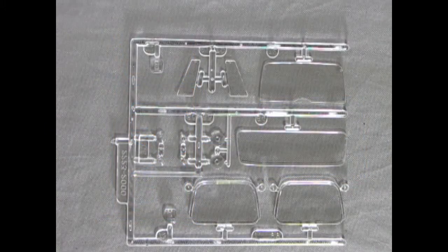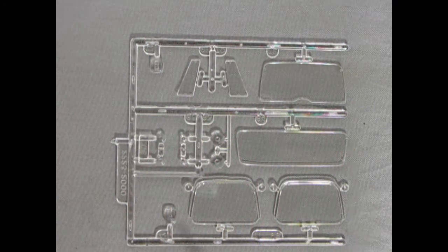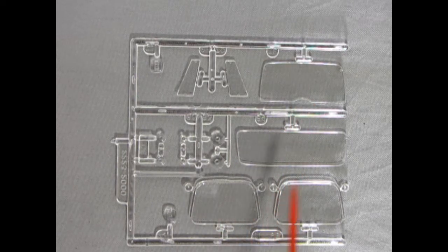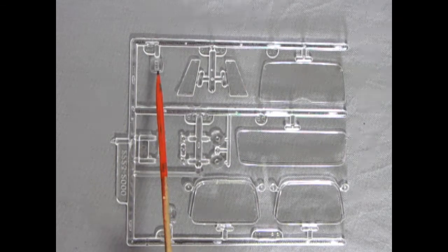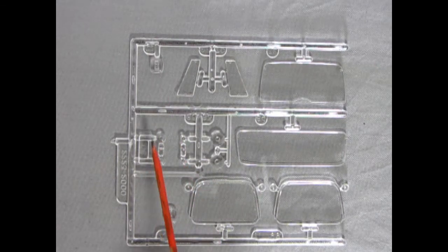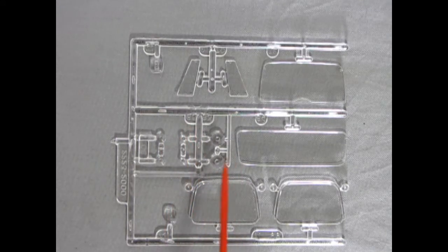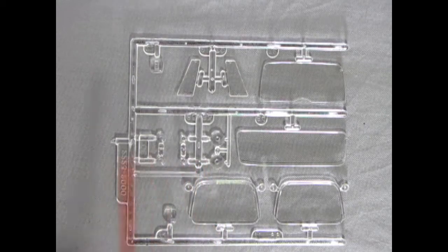Here we have the parts tree that makes up all our clear components and unfortunately Monogram never put this in a separate bag so there are spots where there's a little light scraping which I'll have to polish out. Interestingly enough there are no red components or clear red components in this kit so you're going to have to paint these rear tail lamps with something like Tamiya transparent red or Tester's stoplight red enamel.